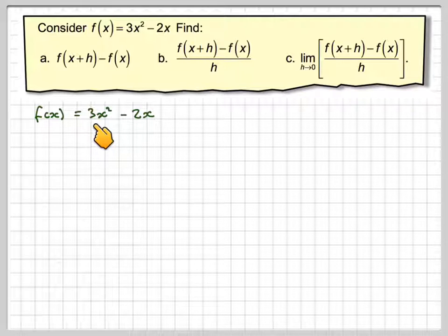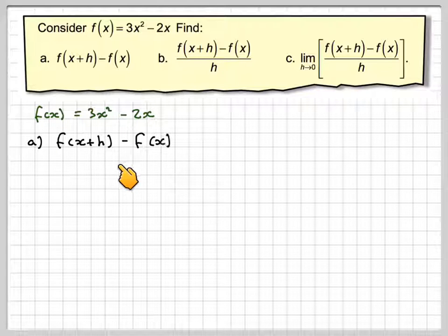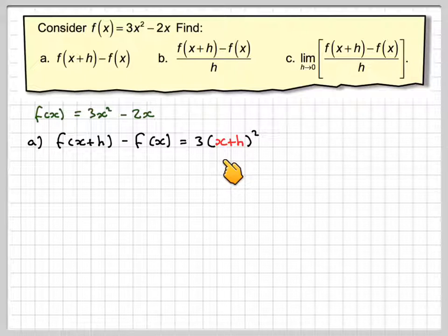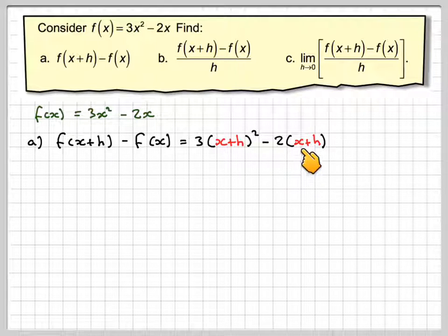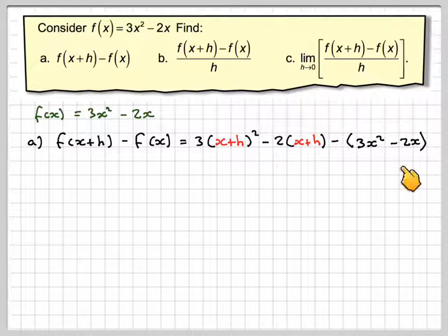So f(x) = 3x² - 2x. For f(x+h) - f(x), we substitute to get 3(x+h)² - 2(x+h) - (3x² - 2x). Be very careful with brackets here. Make sure you use plenty of brackets.